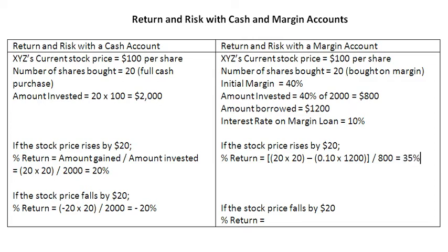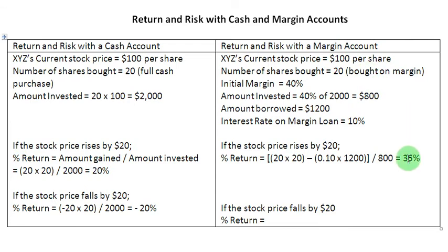We are gaining a clear 15% extra return when we use a margin account to make the purchase. With a cash account, the return was 20%, but with a margin account, when you use financial leverage, the return has been magnified and it goes up to 35%.